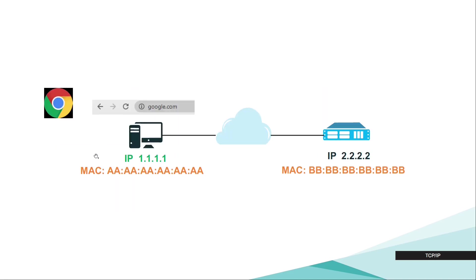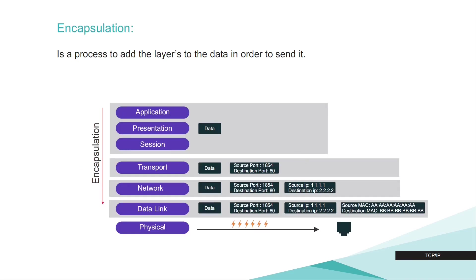Let's take an example to understand more about the OSI model — this is a simplified example; in real life it is more complicated. Imagine I open my Google Chrome browser and type google.com. This is my IP address and my MAC address. Google uses a server with its own IP address and MAC address. When I am sending the data, something called encapsulation happens. Encapsulation is the process of adding the layers to the data in order to send it. My data goes through application, presentation, and session. The application layer adds information about the application itself, the presentation layer ensures the data is usable, and the session layer opens the session for transmitting and receiving data.